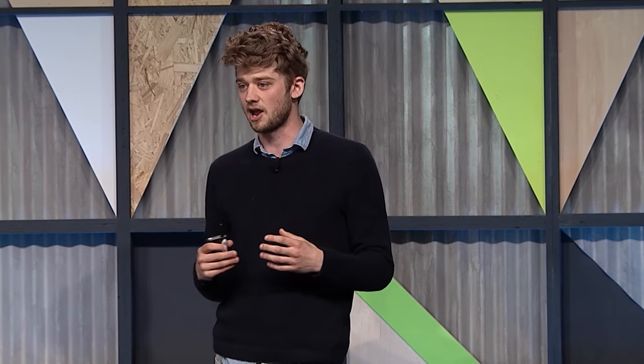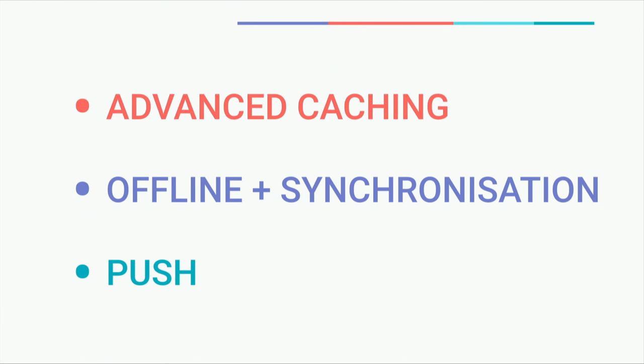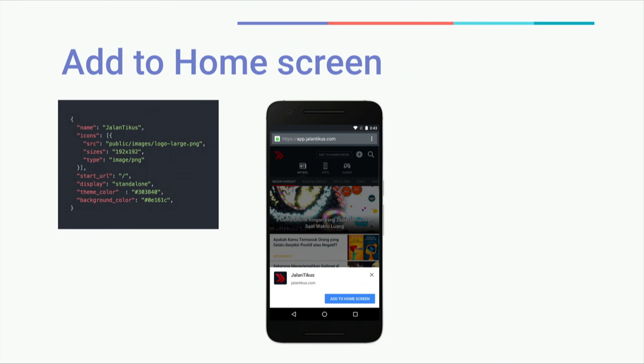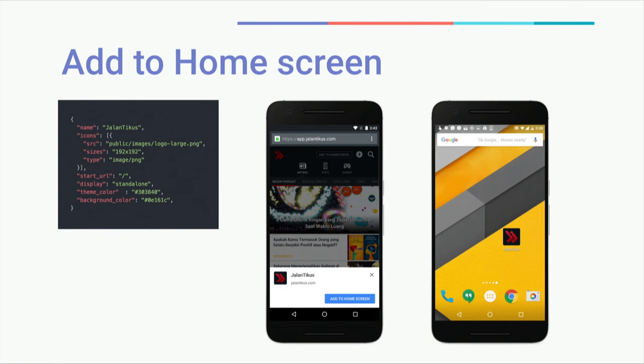Together, service workers allow you to build advanced caching that makes your website fast and reliable regardless of network conditions, enable offline and background synchronization, and allow you to send users push notifications. By also providing a small JSON manifest with metadata about your app — icons and its name — you can show a banner asking users if they want to add the progressive web app to their home screen. If they click it, they get an icon on the home screen just like any native app. Sites that use these rich service worker capabilities and add to home screen are what we call progressive web apps.